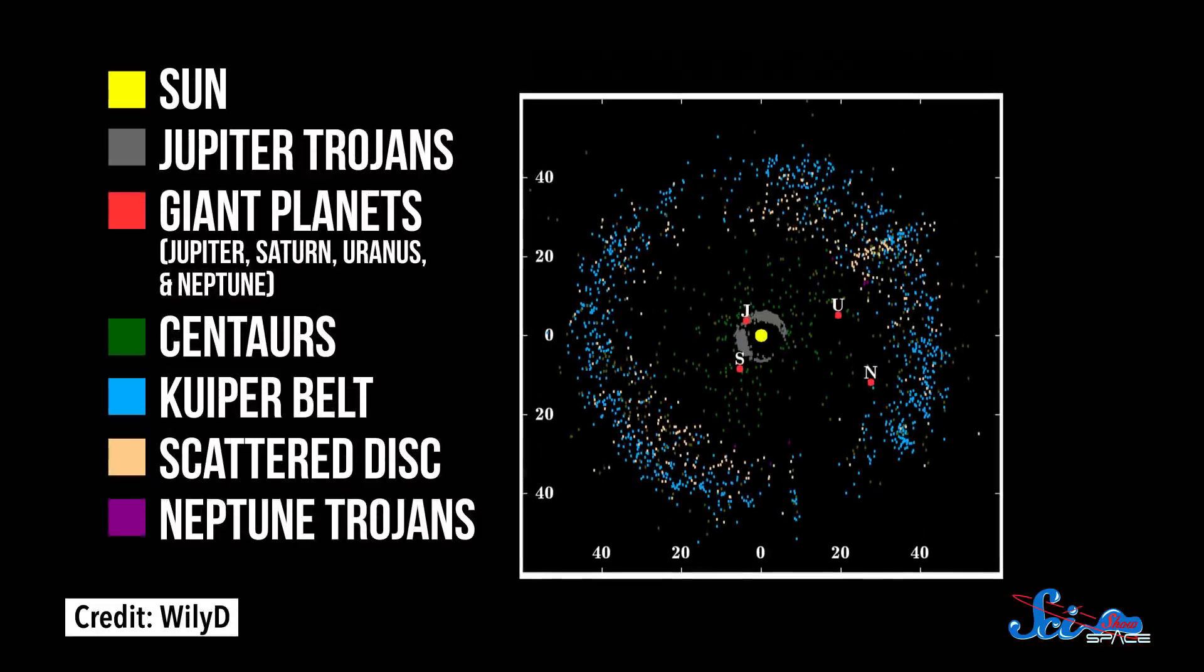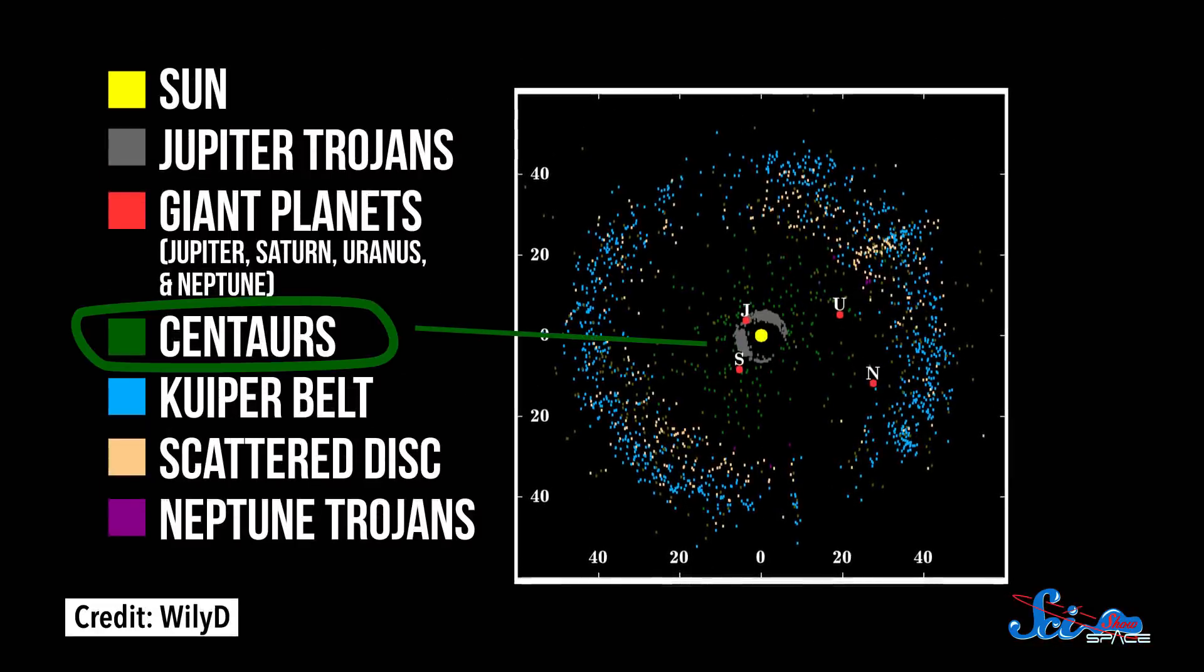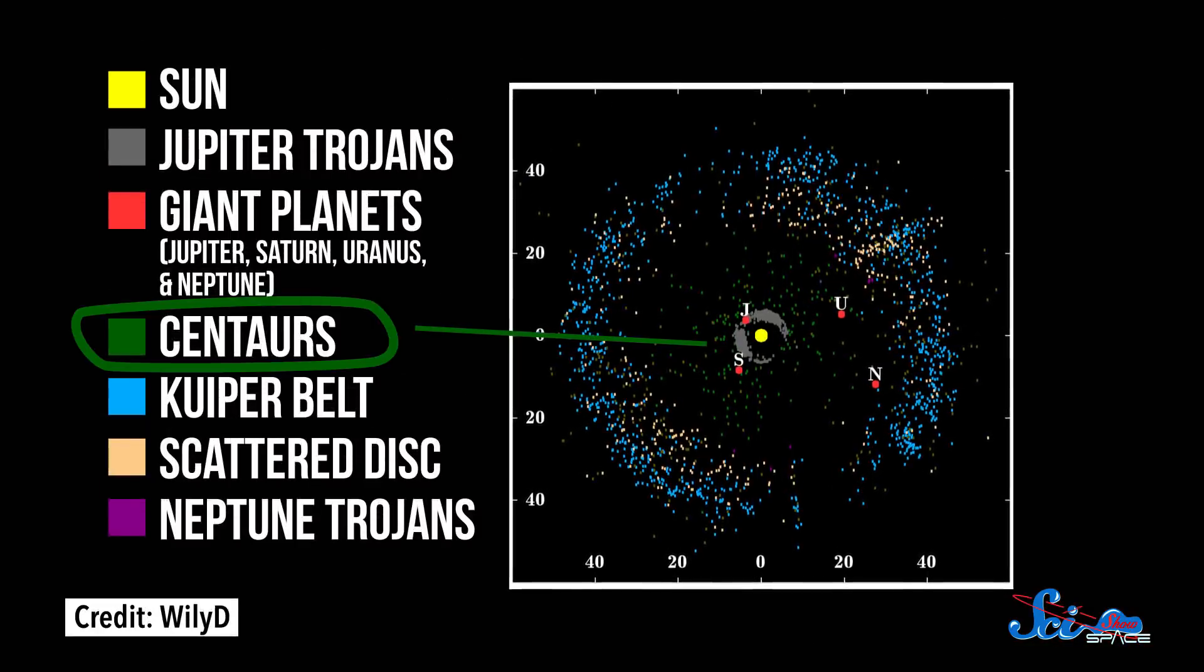Astronomers first spotted this asteroid in 2015, like the name suggests, but they originally thought it was just part of a class of objects called centaurs. These are objects, both asteroids and other icy bodies, that hang out between Jupiter and Neptune.